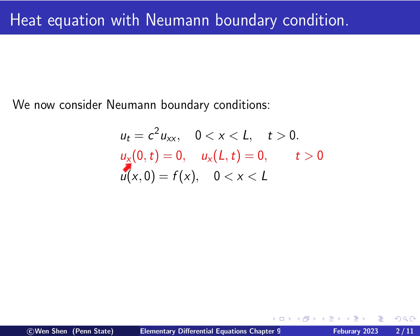So you note that it's now given in terms of the derivative in x, the partial derivative in x. So u_x at x equals 0 and x equals L are fixed to be 0 for all t bigger than 0.